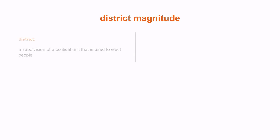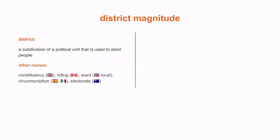Let's start with the first part of the term: the district. An electoral district is a part of a country that's used to elect people. Different countries use different words to refer to districts. In the UK we talk about constituencies, but in other countries people talk about ridings, wards, circumscriptions, or electorates.